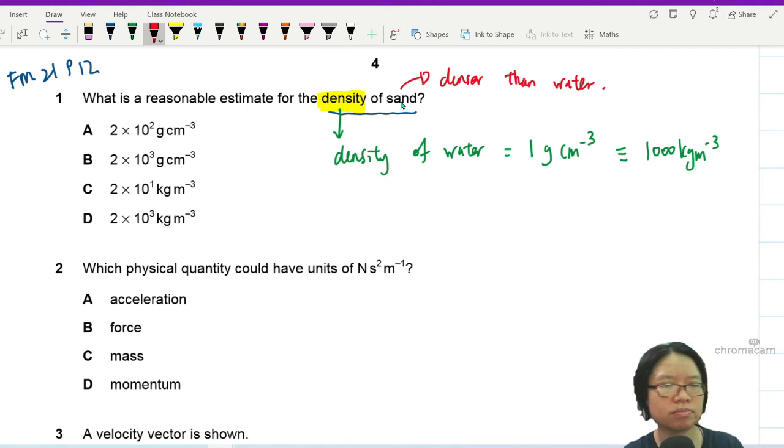Then you look at all these numbers. This is denser but it's not that dense and this one is just too big. Can it be 200 times denser than water? Cannot. Can it be 2000 times? Cannot.